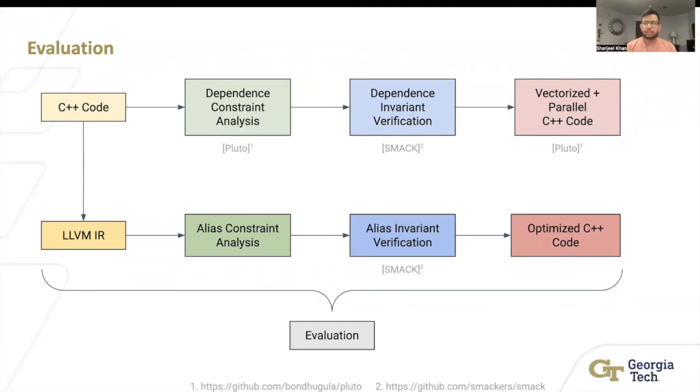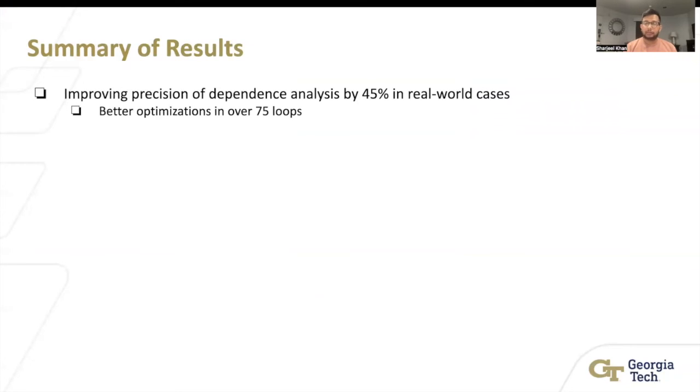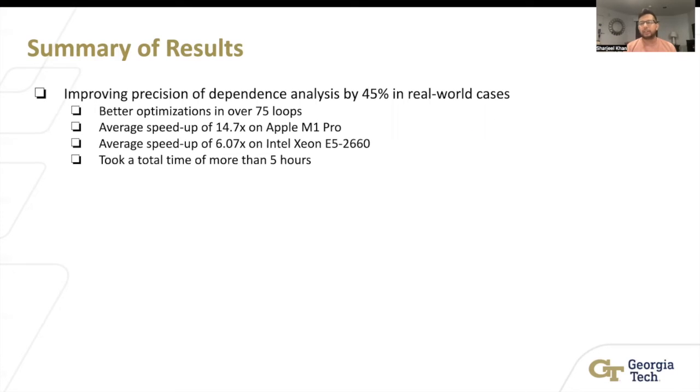Let's now talk about the evaluation of how well we did. Let's talk about first dependence vectorization and parallelization. We have improved the precision of dependence analysis by 45% in real world cases. These are real world applications. We talked about one of them Livermore. We'll show you more. That's a measurement number of 75 loops. We've got an average speedup of 14.7x on Apple M1 Pro. We've got an average speedup of 6.07x on Intel Xeon E5 2660. Of course, verification is faster than how it was before, but it still takes some time on particular benchmarks. There's a bunch called ADDIE. Some of the variables are more convoluted, so it takes a longer period of time to get verified.